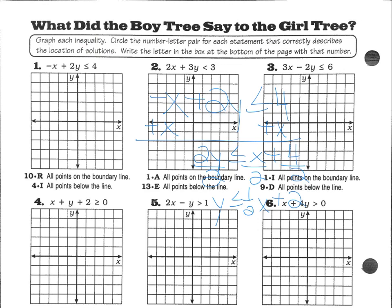So I put it in slope-intercept form, then I'm going to graph. My y-intercept is 2, I go up 1 over 2. And then I have to decide, is it a solid or dashed line? Well, it can equal the line, so that's going to be a solid line.